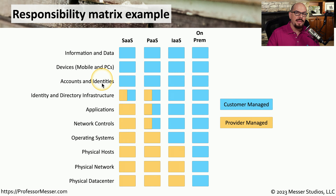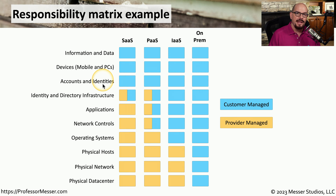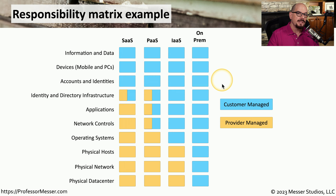You can compare that with the section of the matrix for accounts and identities, which obviously has a significant security concern. In the case of this cloud provider, the customer is always responsible for anything associated with their accounts. If you're wondering what the responsibility matrix might be for your cloud provider, they probably already have it documented as part of their services.